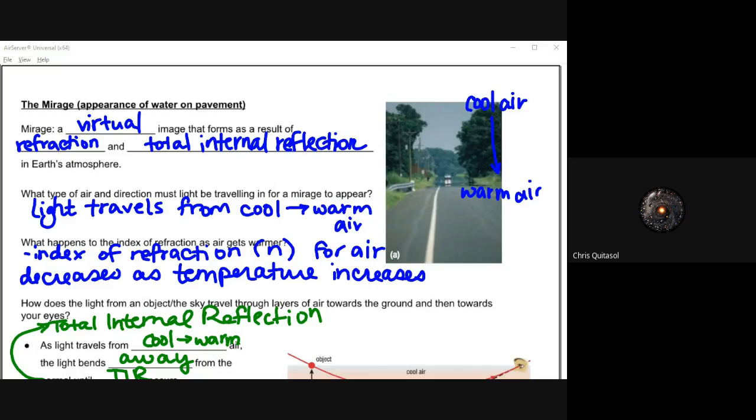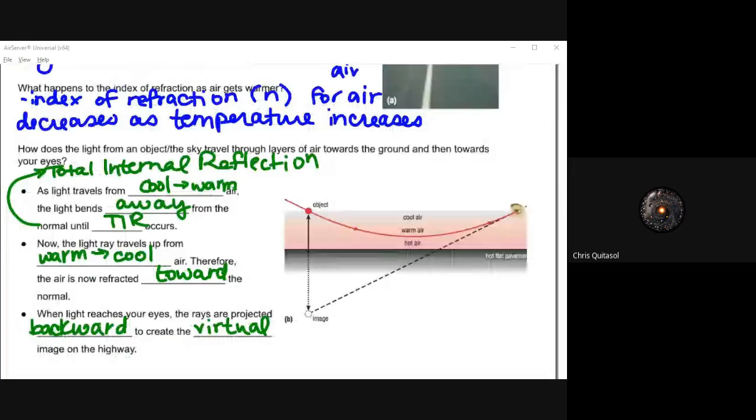Cooler air and warmer air creates different index of refractions. And as a result of that difference of index of refractions, we have a slower and faster speed medium, and that creates refraction. But on top of that refraction, we also have total internal reflection.